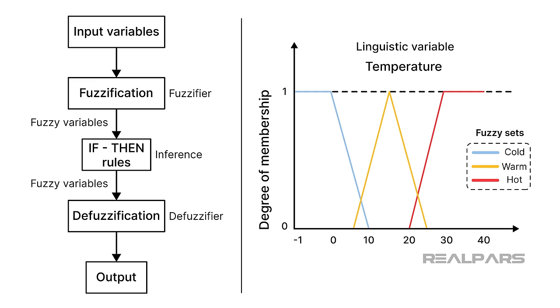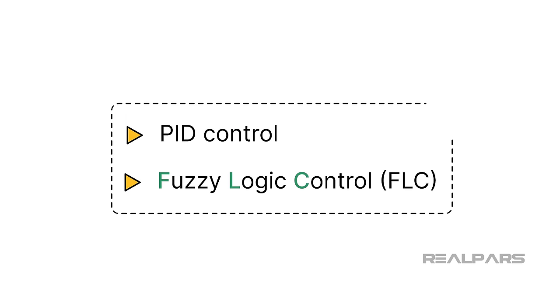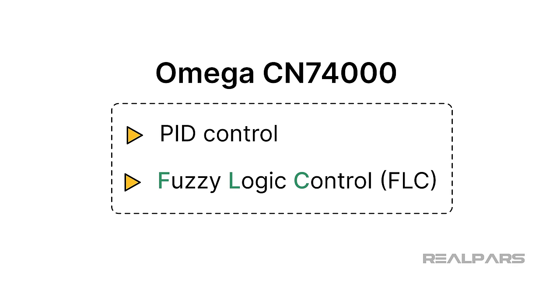FLC uses a set of if-then rules that express how the input variables relate to the output variable. These rules are based on linguistic terms. For example, a fuzzy rule might be, if the temperature is hot, then the fan speed is high. Fuzzy inference assesses how well the input variables match the conditions specified in the fuzzy rules. Finally, defuzzification is the process of converting the fuzzy conclusions into a real-world output value. Some vendors have combined PID and fuzzy logic. The Omega CN74000 series controllers are self-tuned PID controllers with fuzzy logic features.